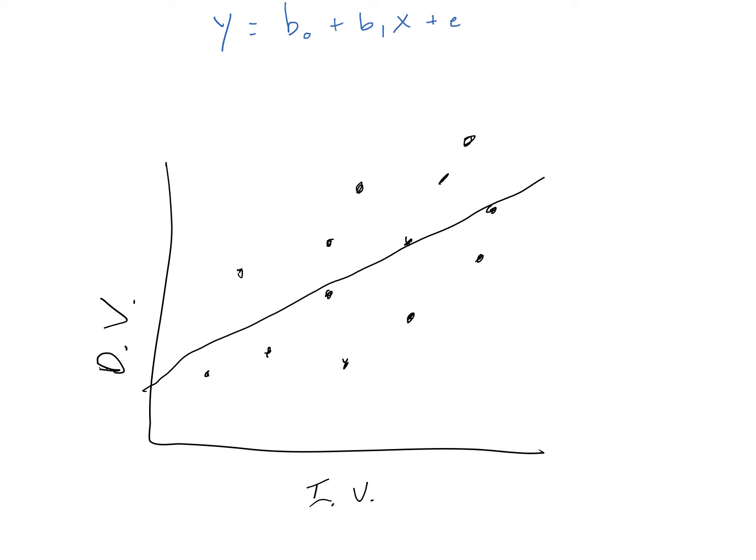The equation for this line starts with y, which is the value of the dependent variable predicted by the equation. When using linear regression, the symbol beta is used to represent the intercept and slope of the best fit line. Beta 0 is the y-intercept of the line, and beta 1 is the slope of the line. x is the independent variable, and e is an error term representing the fact that people's values for the dependent variable do not fall exactly on the line.